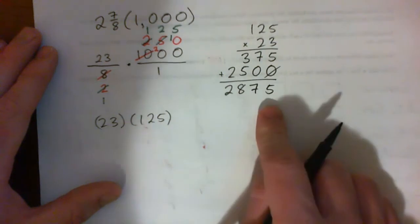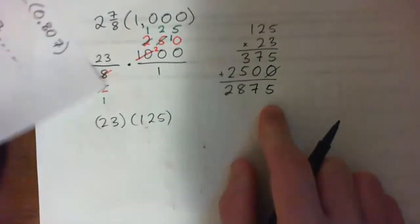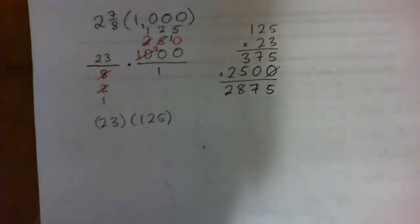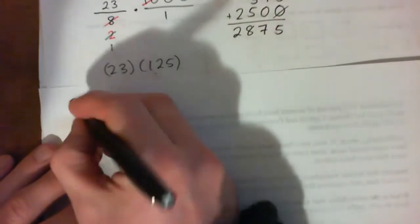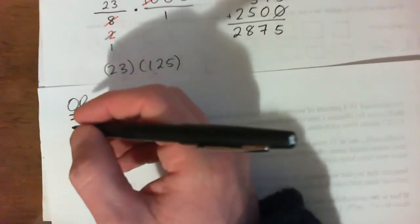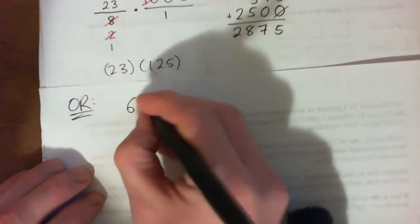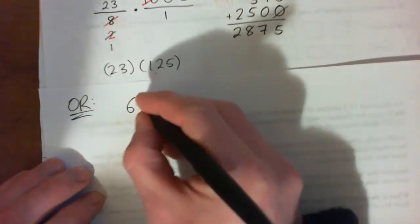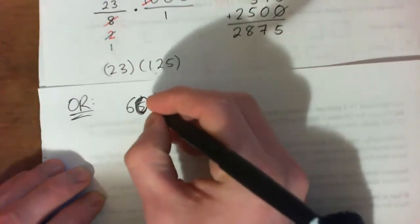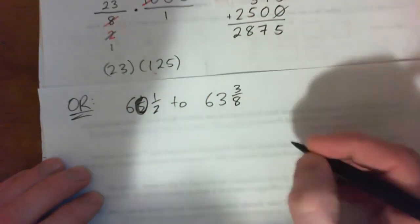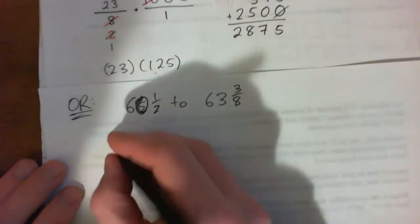That's the amount the shares have increased — that's one way of doing it. But there are other ways. The General Mills shares went from sixty and a half to sixty-three and three-eighths.